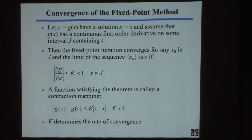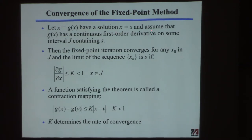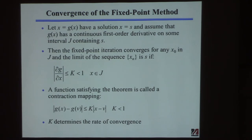Assume that g(x) has a continuous first-order derivative. In most engineering problems, you can take all the derivatives you want and they'll be smooth and continuous. This doesn't have to be true everywhere — just near the solution. A function can become discontinuous way off at large x values, and we're not interested in that region.